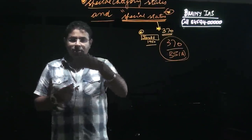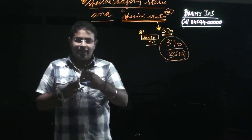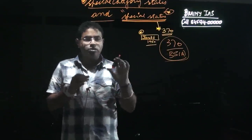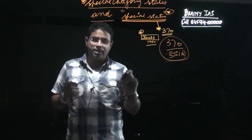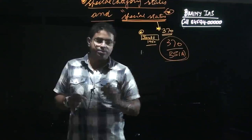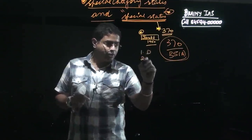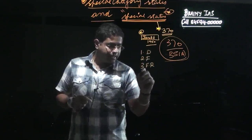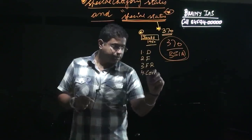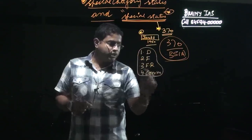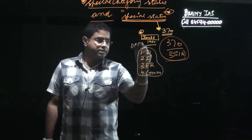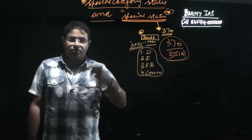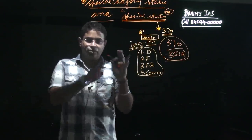For normal states we have subjects like the Union list, concurrent list, and state list, but for Jammu and Kashmir only four subjects were kept with the central government. These four subjects were: first, Defense; second, Finance; third, Foreign Relations; and fourth, Communication — remembered as DFFC. The rest of the subjects were transferred to the state.